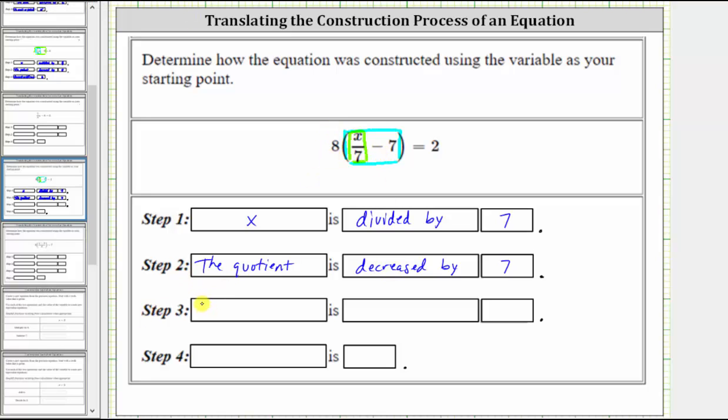Step 3 is the difference, which is the difference of the quotient and 7, is multiplied by 8.